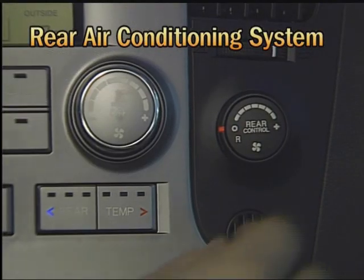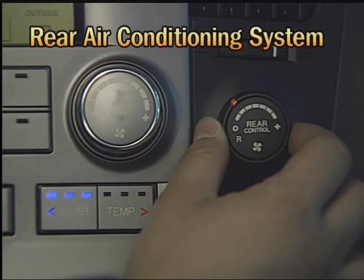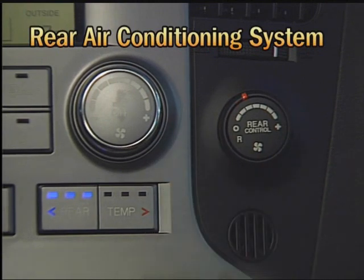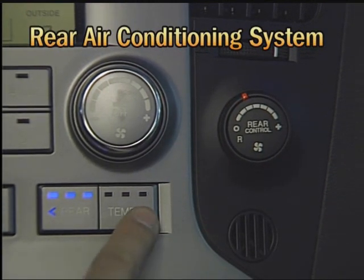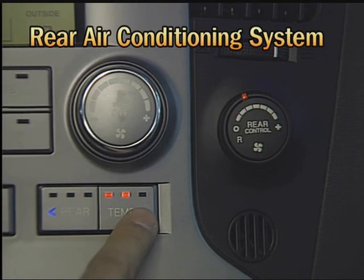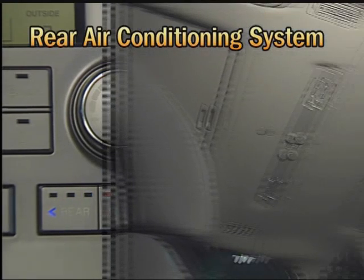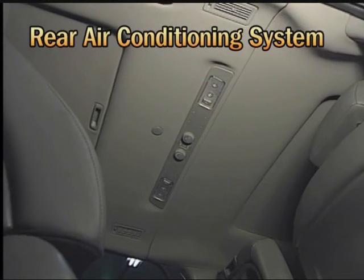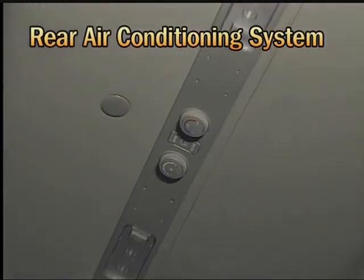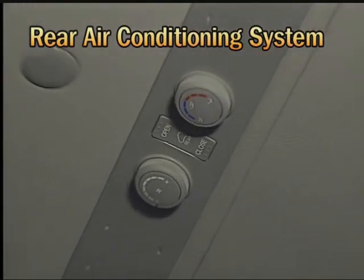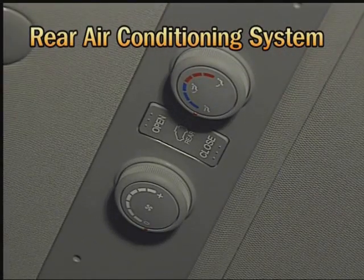At positions other than R range, the blower motor speed control, temperature control, and mode control are possible via the front air conditioner control module. The rear air conditioner control is installed at the roof of the first and second rows.